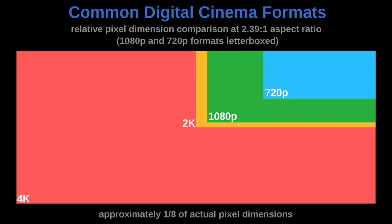A pixel count of 3840 by 2160 is called UHD or Ultra HD. Some cameras shoot just short of 4K but still call it 4K, which is a little bit confusing. This graphic gives you a really clear example of the sizing differences.